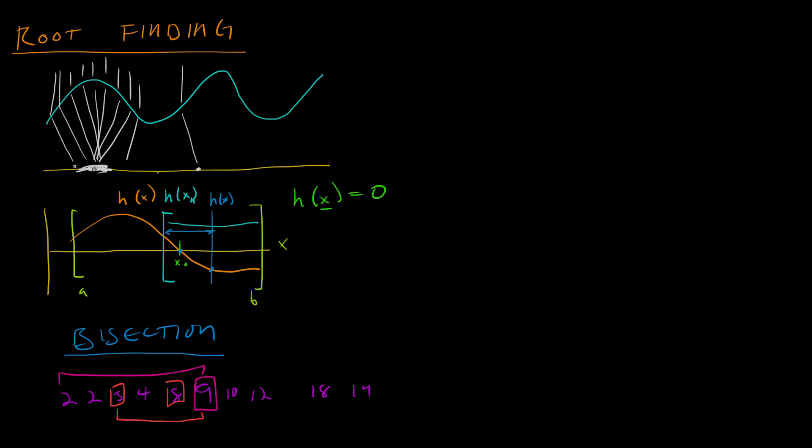This is called bisection method because every iteration you are bisecting your interval — cutting it in two. There are a few things you must know before you can apply it. First, you have to know that the function has a root at all. If h is always positive or always negative, the function has no root and you cannot use any root finding methods on it.